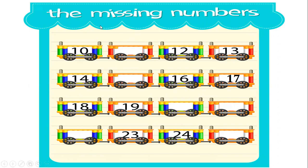First box is 10. After 10 what will come? 11. You have to write 11 here. Third box is 12, fourth box is 13. Like this you have to find the missing numbers.